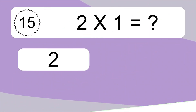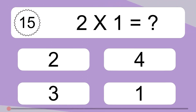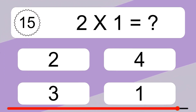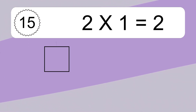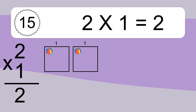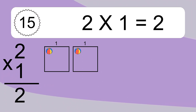2 times 1 equals what? 2 times 1 equals 2. We have 2 boxes, and each box has 1 colorful ball inside. If you count all the balls in all the boxes together, you will have 2 times 1 balls. This equals 2 balls.